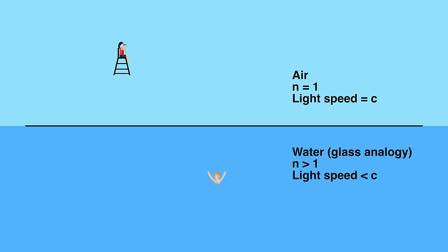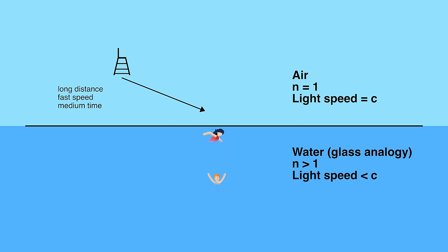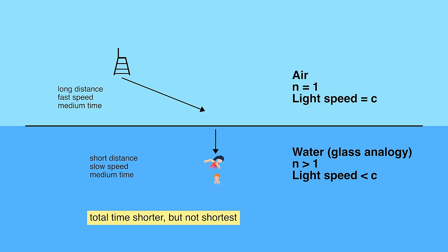So what path does the lifeguard take? He could run directly to the water and start swimming. This means he would swim a long distance, but because he can run so much faster than he can swim, that would be a bad choice. So you'd think that he might just run over to the point where the swimming portion is shortest, but that turns out not to be the shortest time either.